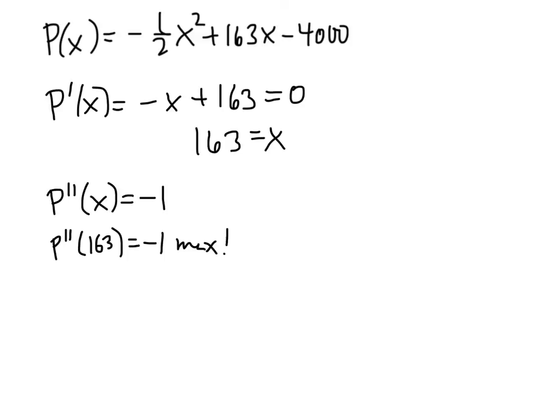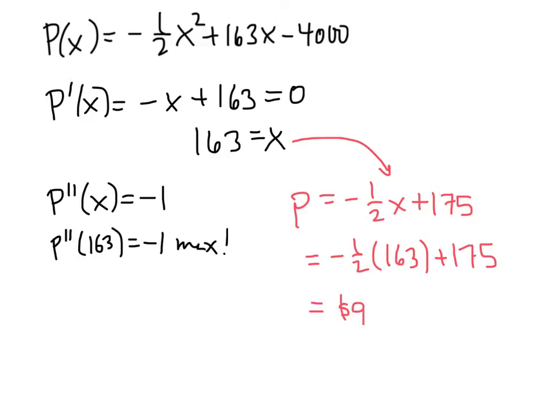So this tells us that in order to maximize our profit, we should occupy 163 of our rooms. But if we look back at the original statement of the problem, that's not what they were asking for. They were asking for the price that maximizes the profit. But fortunately, we have an equation, a demand equation, that relates price and quantity. And that equation was P equals negative 1 half X plus 175. So now all we need to do is take our solution for X, plug it in. Negative 1 half times 163 plus 175. And when we evaluate that, we get $93.50. And that's our solution. To maximize our profit, we should charge $93.50 per room.